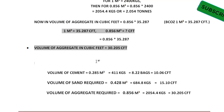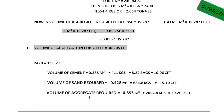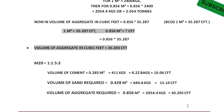Summary for M20 grade concrete (ratio 1:1.5:3) for 1 cubic meter: Volume of cement = 0.285 cubic meters, weight = 411 kgs, bags required = 8.22 bags, volume in CFT = 10.06 CFT. Volume of sand = 0.428 cubic meters, weight = 684.8 kgs, volume in CFT = 15.10 CFT. Volume of aggregate = 0.856 cubic meters, weight = 2054.4 kgs, volume in CFT = 30.205 CFT.